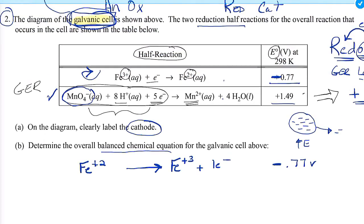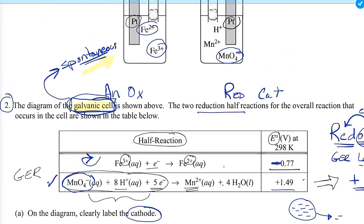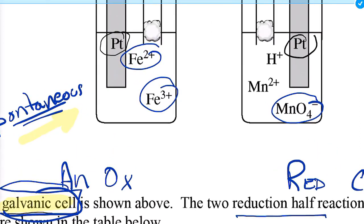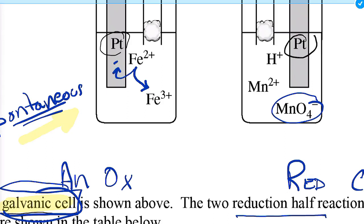I'm writing the flipped half-reaction: Fe²⁺ goes to Fe³⁺ plus one electron. Notice I just flipped it — what was a product is now a reactant — and I'm changing the sign to negative 0.77 volts. This is clearly oxidation. So iron +2 is going to iron +3, sending an electron in the process.